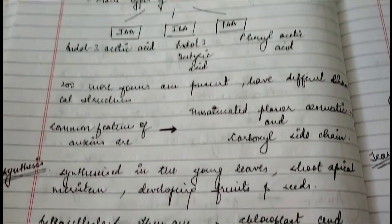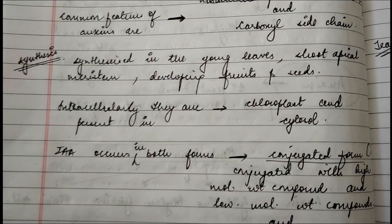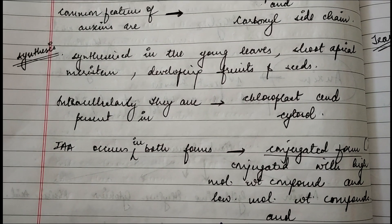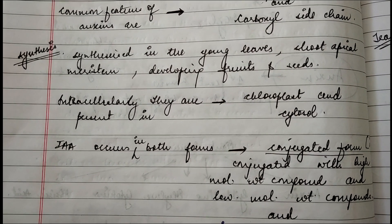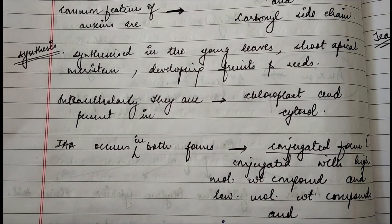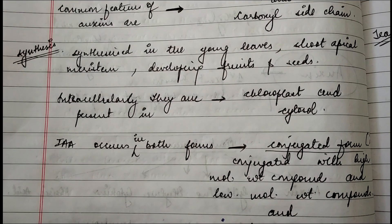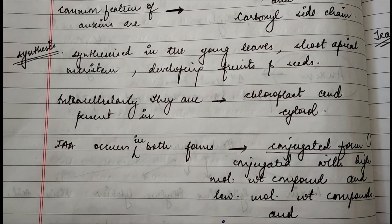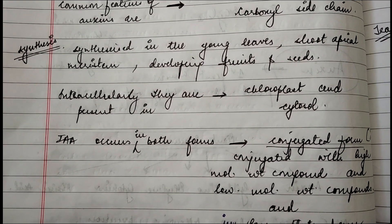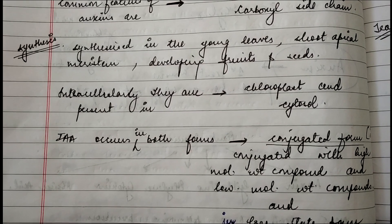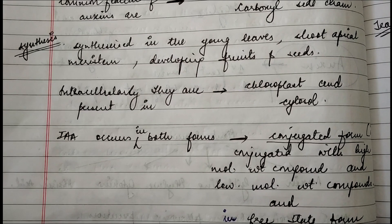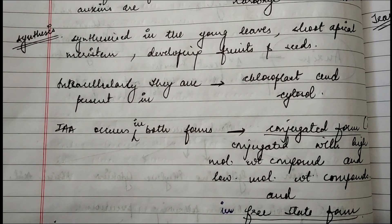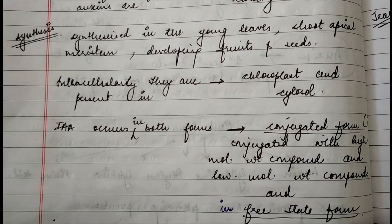Synthesis means where auxin is synthesized inside the plant. It is synthesized in young leaves — the light green ones you see coming out — as well as in the shoot apical meristem, developing fruits, and seeds. These are the major common parts where synthesis takes place. Intracellularly, auxin is synthesized in the chloroplast and cytosol.